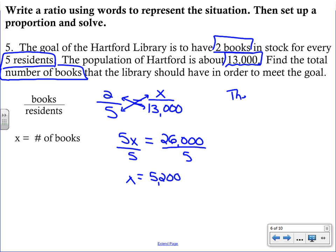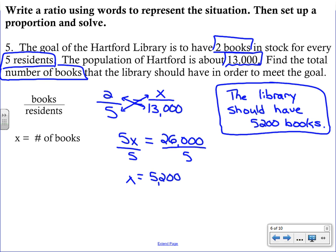It's good to write an answer statement as well. Sometimes when you solve for a variable, it's not always going to be your final answer. In this case, it is. But you still want to write a sentence for your answer. So we'll say the library should have 5,200 books. And that's where our label comes in. Then we know what that 5,200 is.